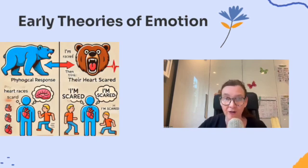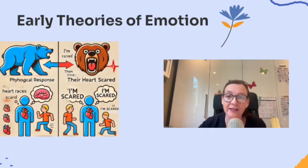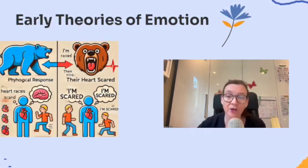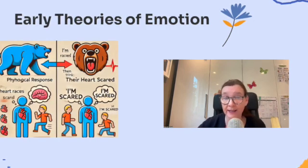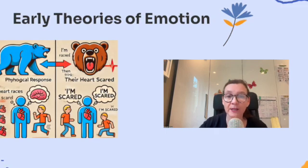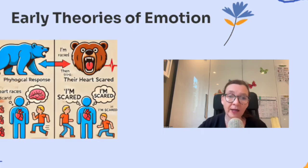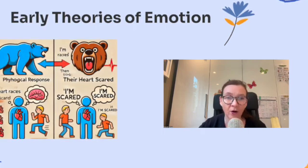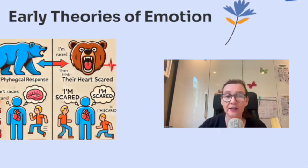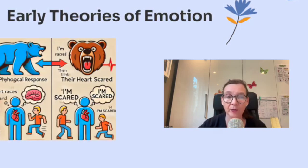For example, you see a bear, your heart races, and then you think 'I'm scared.' Or the second approach — simultaneous theories — your body and brain respond at the same time. So you see the bear, and both your fear and racing heart happen together. Understanding these early theories helps us explore how emotions guide our behaviors and decision making. Do we react first and think later, or do we feel emotions and bodily responses at the same time? Psychologists have studied these questions to understand the link between our brains and our bodies.